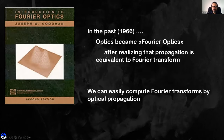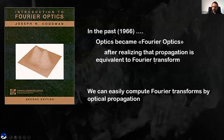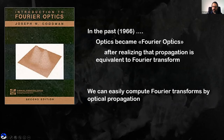Fourier optics is considered to have started with a very famous book by Goodman published in 1966. In this book there is a clear connection between optics and mathematics, specifically the Fourier transform. We know that propagation in optics is equivalent to a Fourier transform — linear propagation allows us to easily compute Fourier transforms by optical propagation. That is what we mean by Fourier optics.